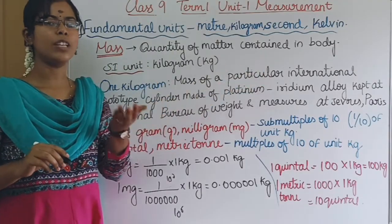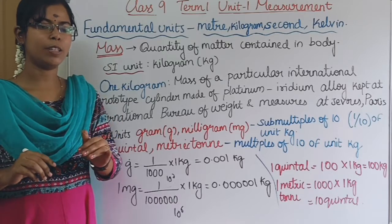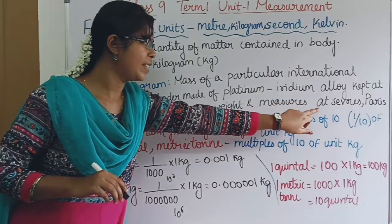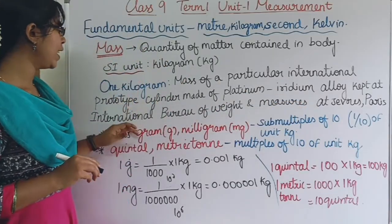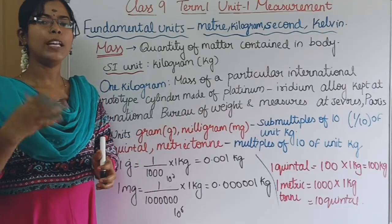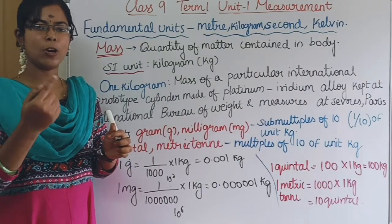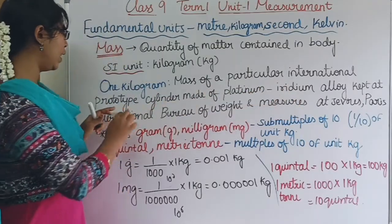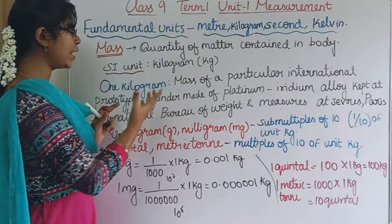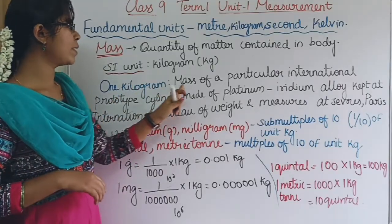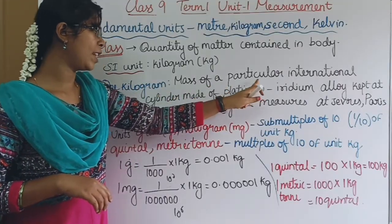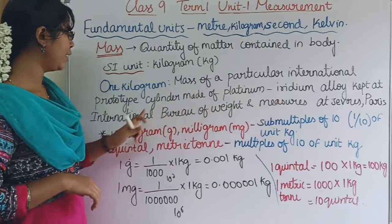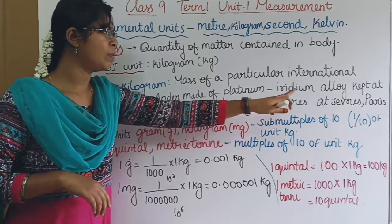If you have a body, there is a quantity of matter in it — that is the mass. The definition of 1 kilogram: 1 kilogram is the mass of a particular international prototype cylinder made of platinum-iridium alloy, kept at the International Bureau of Weights and Measures at Sèvres, Paris.